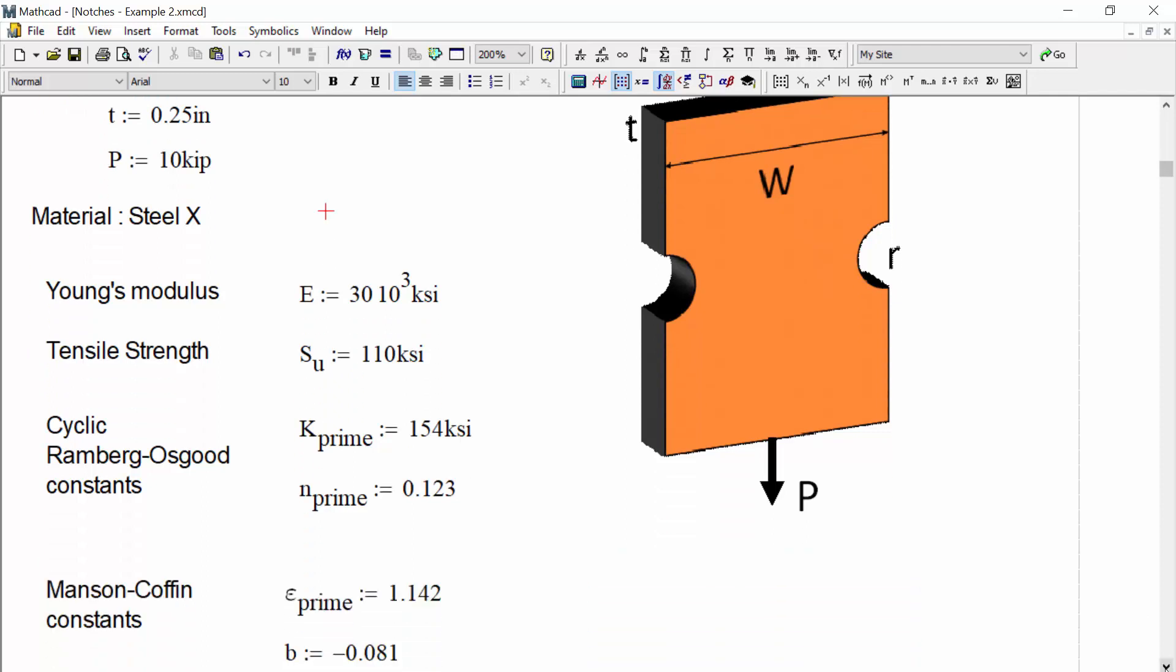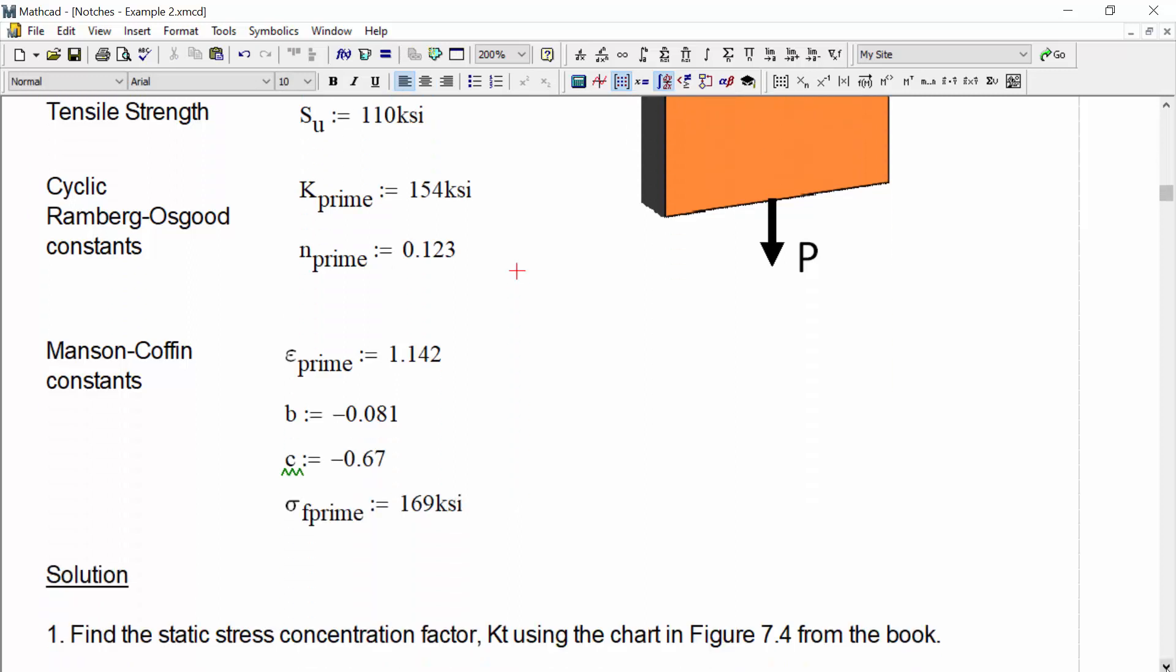The plate is made of a material called steel X, which has a Young's modulus of 30 times 10 to the 3 kSI, that's 30 MSI, a tensile strength of 110 kSI. And we're given the cyclic Ramberg-Osgood constants K prime and N prime of 150 kSI and 0.123 respectively.